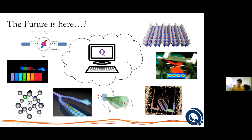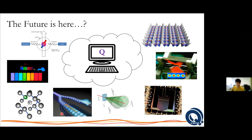There can be many physical platforms where you can implement computation. For example, you can have nuclear magnetic resonance, quantum dots, NV centers, photonic waveguides, quantum optics, superconducting circuits — which are the go-to for the industry players now, like Google, IBM, and Microsoft, putting a lot of money into this technology — as well as trapped ions and neutral atoms.